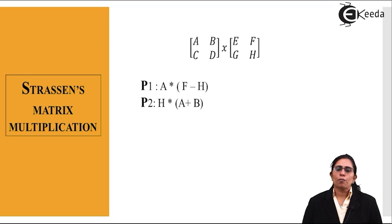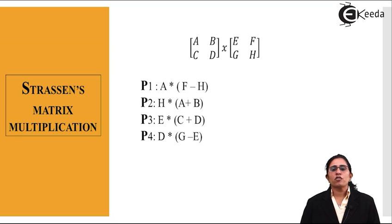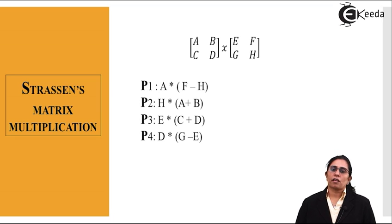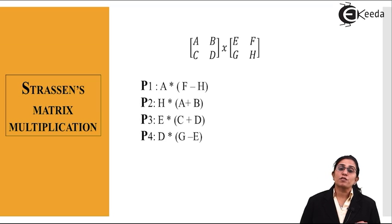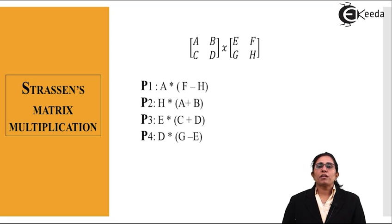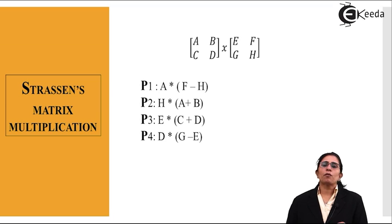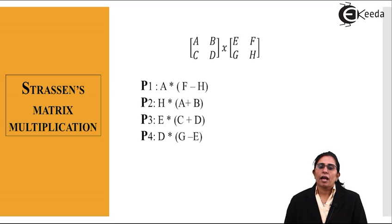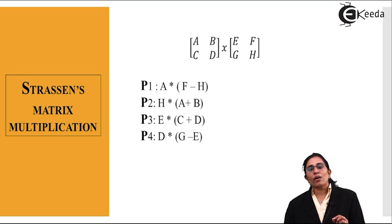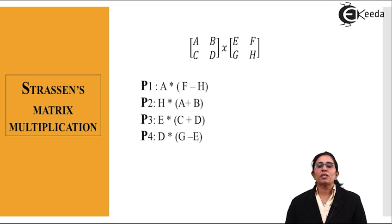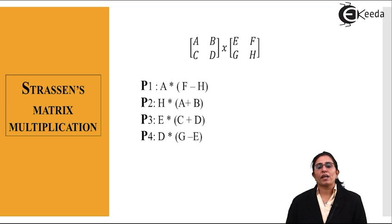P1 through P4 follow a mnemonic: remember the word AHED (A, H, E, D). Write those letters in front of P1, P2, P3, and P4 respectively. The key rule is: when working with rows, values are added; when working with columns, values are subtracted.